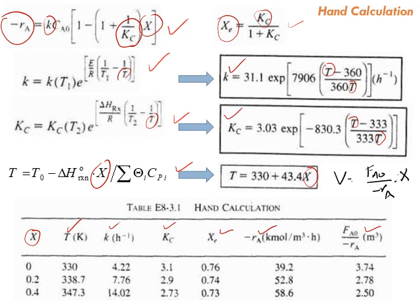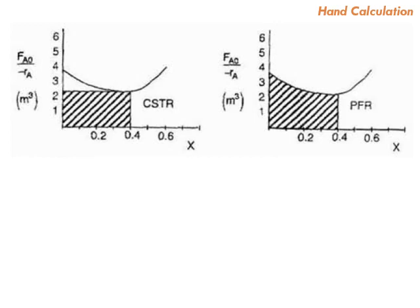We have the values of Kc thermodynamics, so we can evaluate and design both reactors — the plug flow reactor and the CSTR — with hand calculation. Looking at the Levenspiel plot, you can see the shading that represents the volume of the CSTR and the volume of the plug flow reactor. In this case, the required volume to achieve 40% conversion for the CSTR is smaller than that for the plug flow reactor.